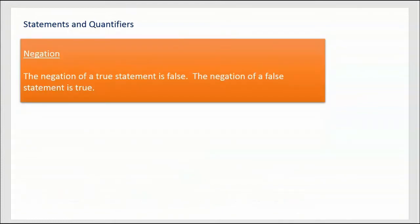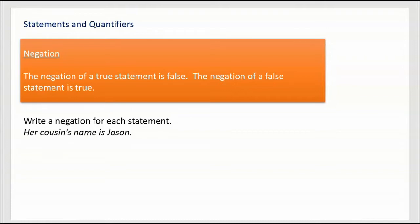Next, the idea of a negation. The negation of a true statement is false, and the negation of a false statement is true. You're just changing the truth value of the statement. Write a negation for each statement. The first one is: 'Her cousin's name is Jason.' We could negate this as: 'Her cousin's name is not Jason.' That definitely negates the statement.